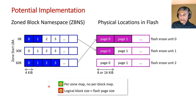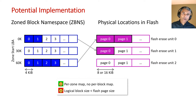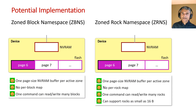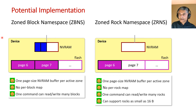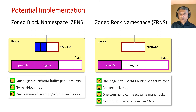The only challenge is that a block is typically four kilobytes, while the unit of programming NAND flash is a page, which is typically 16 kilobytes, so a single block cannot be written directly to flash. Most SSDs address this by staging writes in internal NVRAM. For this, the SSD needs only a page-size buffer for each active zone, which is a relatively small amount of NVRAM because zones are large and only some of them are active at a time.